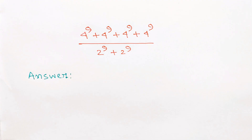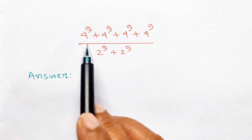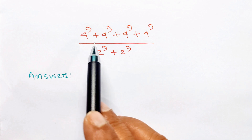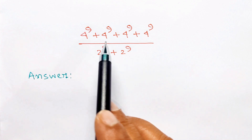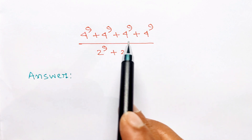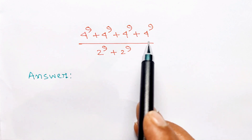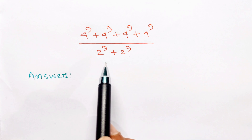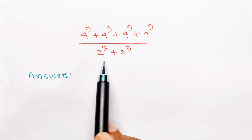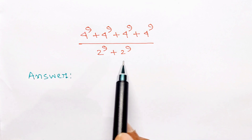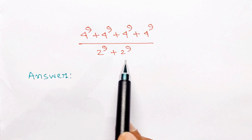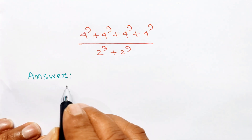Hello everyone. In this video we are going to find the value of 4 to the power 9 plus 4 to the power 9 plus 4 to the power 9, divided by 2 to the power 9 plus 2 to the power 9.